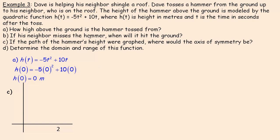Question B: if his neighbor misses the hammer, when is it going to hit the ground? It hits the ground when the height is zero. We found one zero at t = 0 when it was first tossed; now we need to find the other zero. We set h(t) = 0, so we put zero in place of h(t) and solve for t.